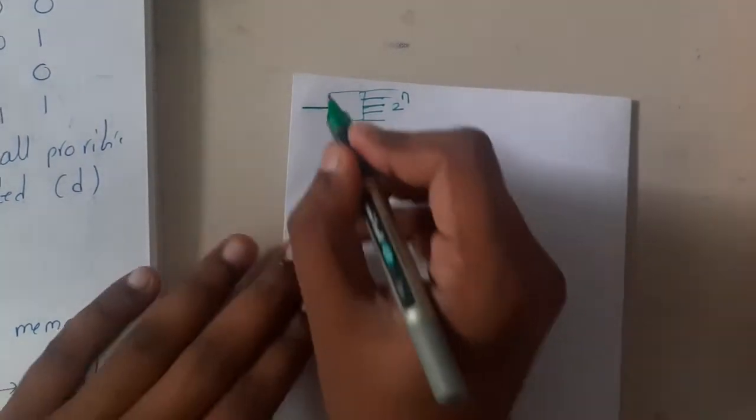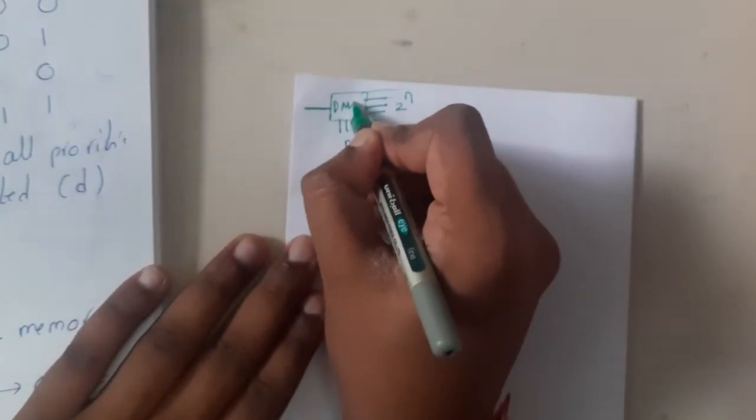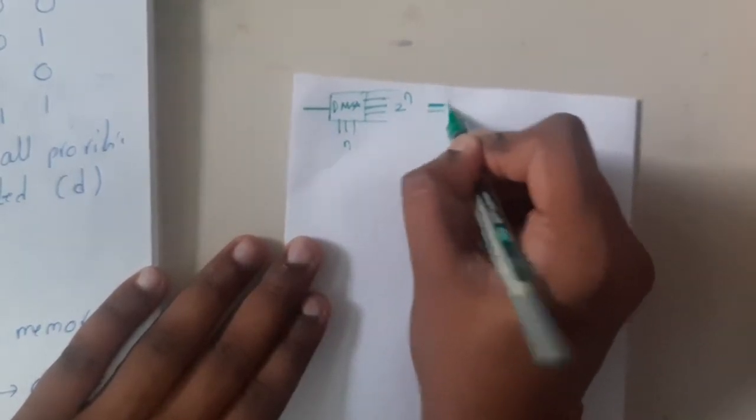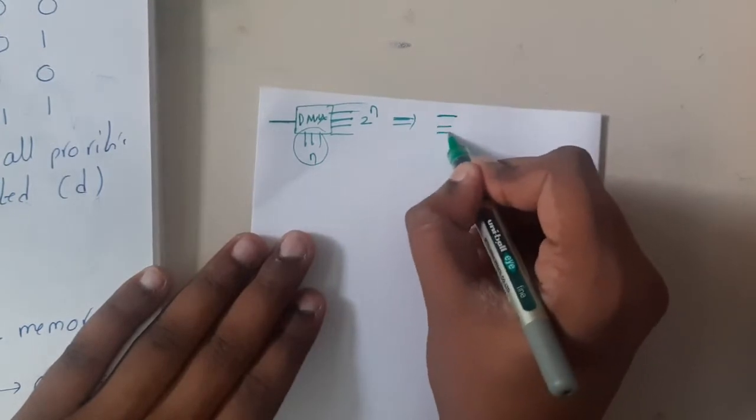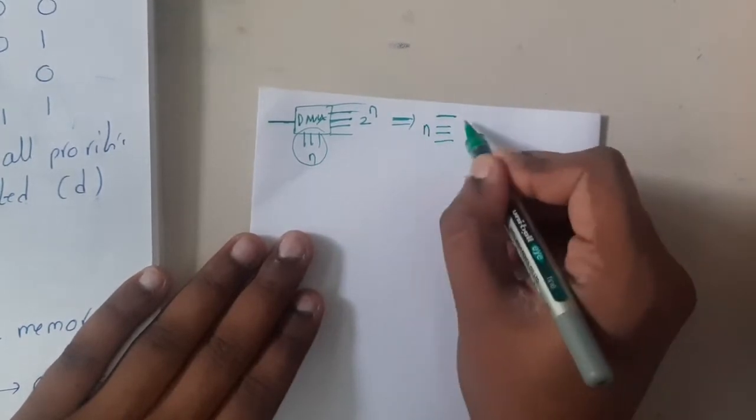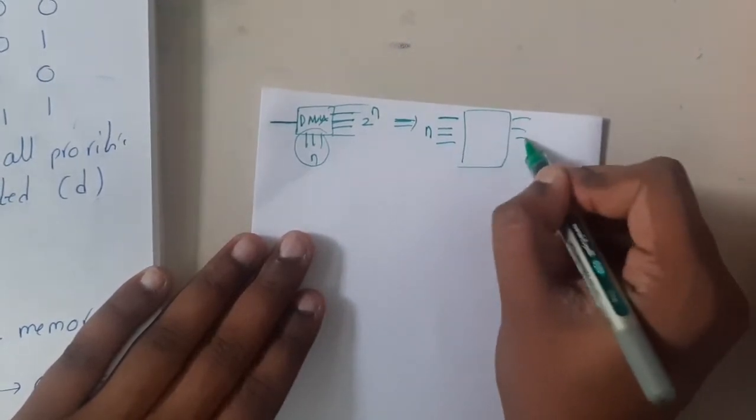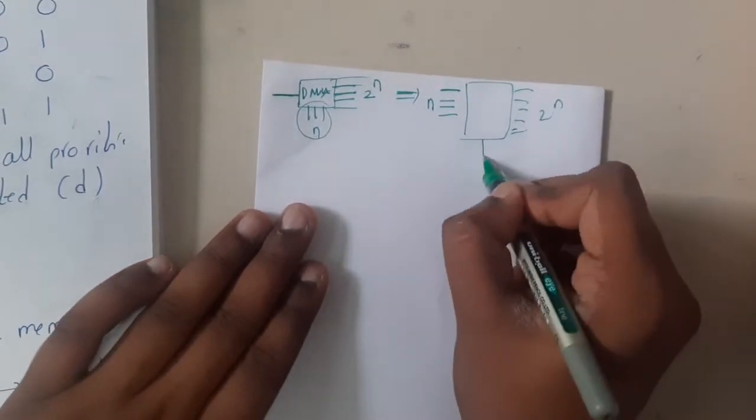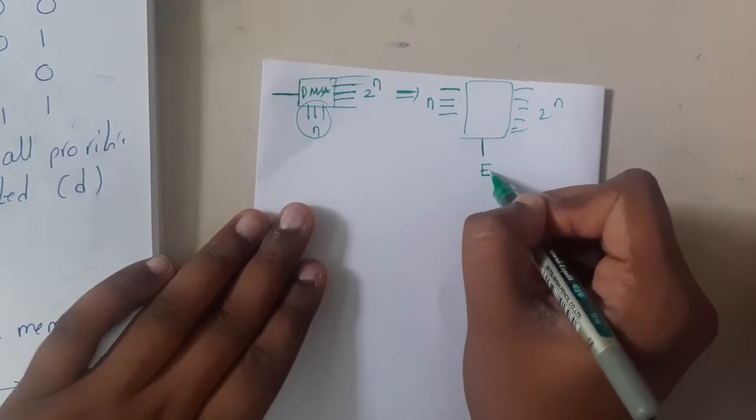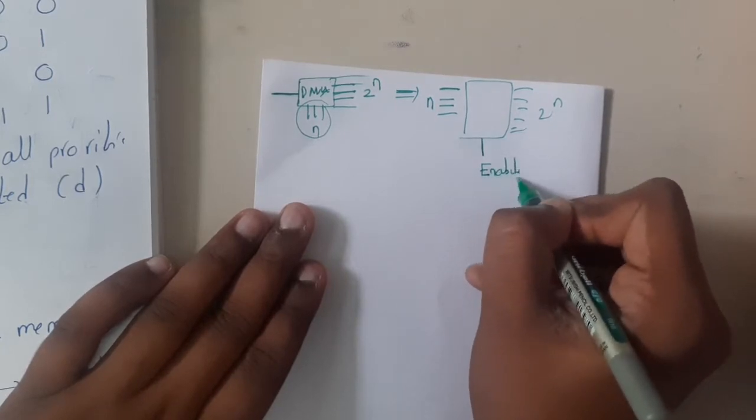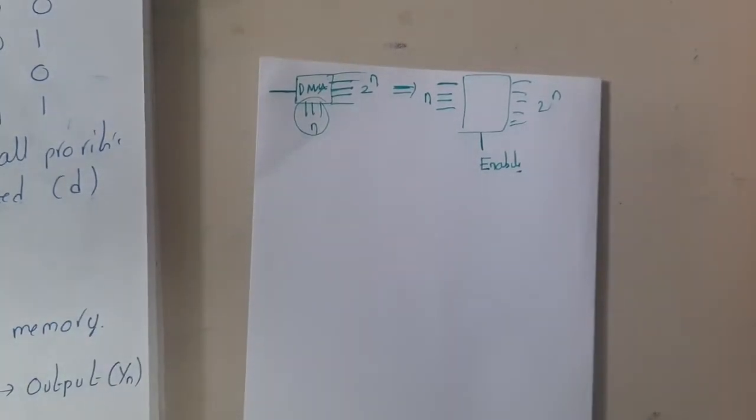A slight change to it: push the select lines to the inputs. You will have n inputs and 2 power n outputs with a single enable or select line. Here we have directly removed the select line, so now we will have only enable line. This concept is nothing but a decoder.